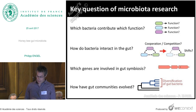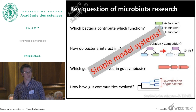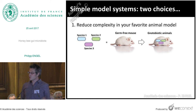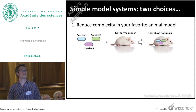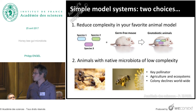I believe that simple model systems can help to understand what is going on in these complex communities, for example in the mammalian gut. There are two different strategies you can take. The first one, which most people probably take, is to reduce the complexity — you work on the popular model system, which for many people is the mouse system. Instead of colonizing a mouse with hundreds of different species, you only colonize it with a couple of species.